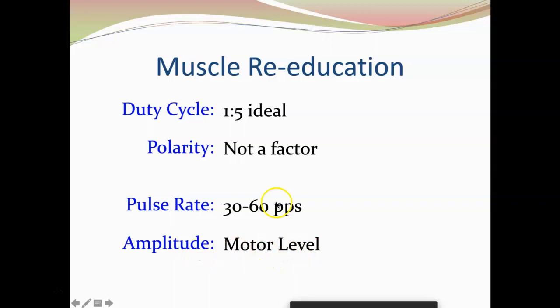If we want to increase muscular strength and re-educate a muscle that has atrophied, we want the frequency at minimum 30 pulses per second, but ideally up to 60 pulses per second, because this is where we cause muscle tetany and facilitate more muscular contraction. In terms of amplitude for muscle re-education, we need to crank the stim up enough that the patient can feel it, but more importantly so that we visibly see a muscle contraction — that would be motor-level stimulation. We need to see the muscle contraction for it to be an effective muscle re-education treatment.